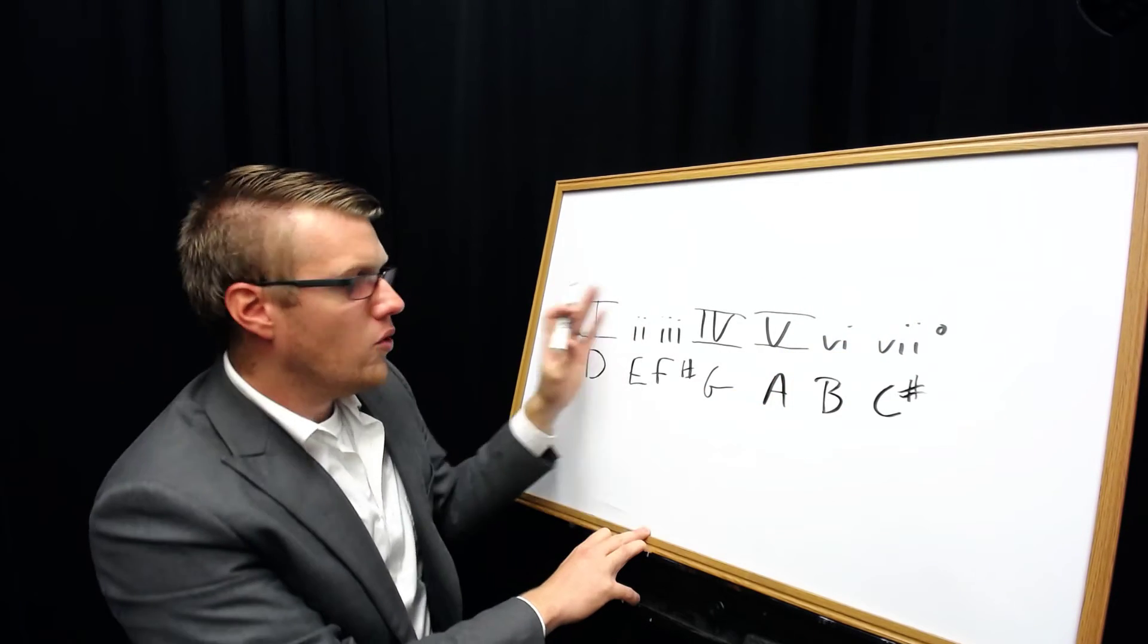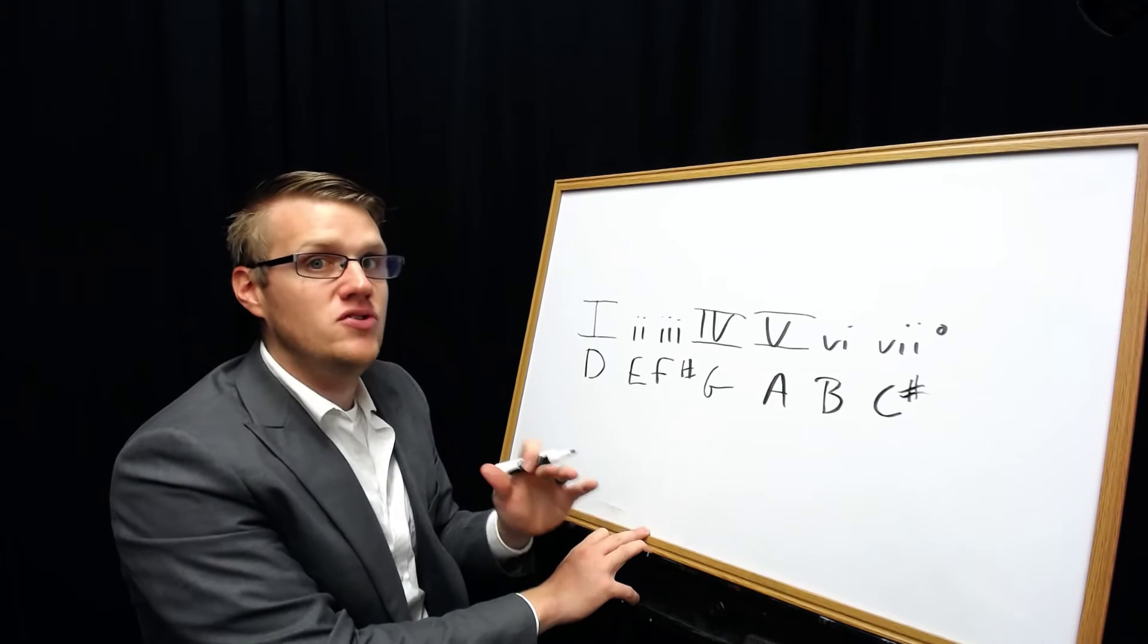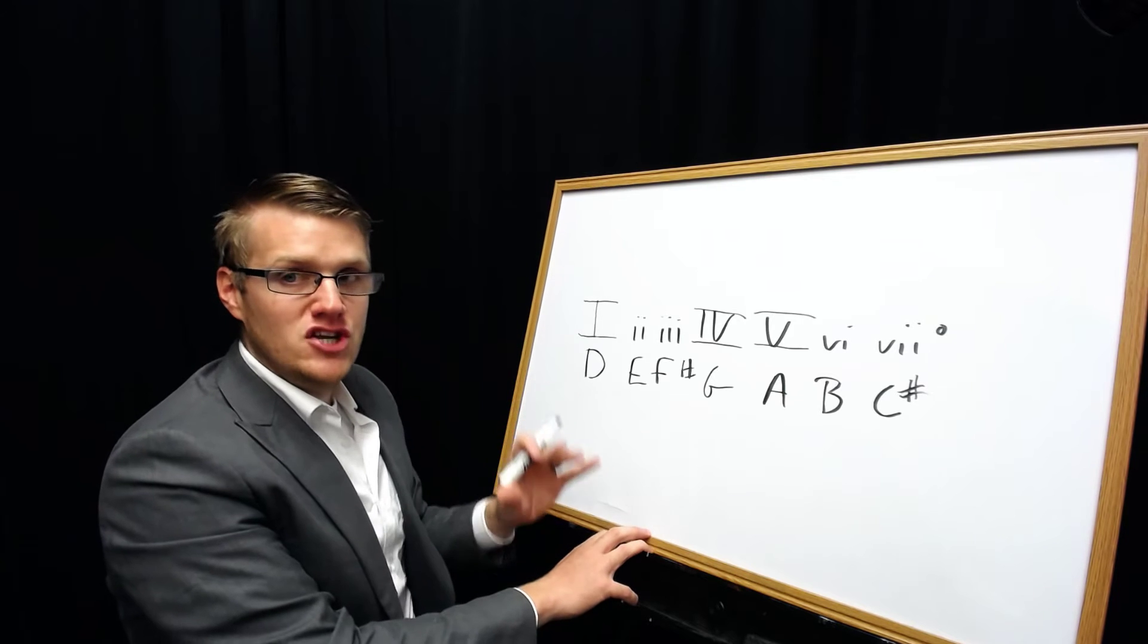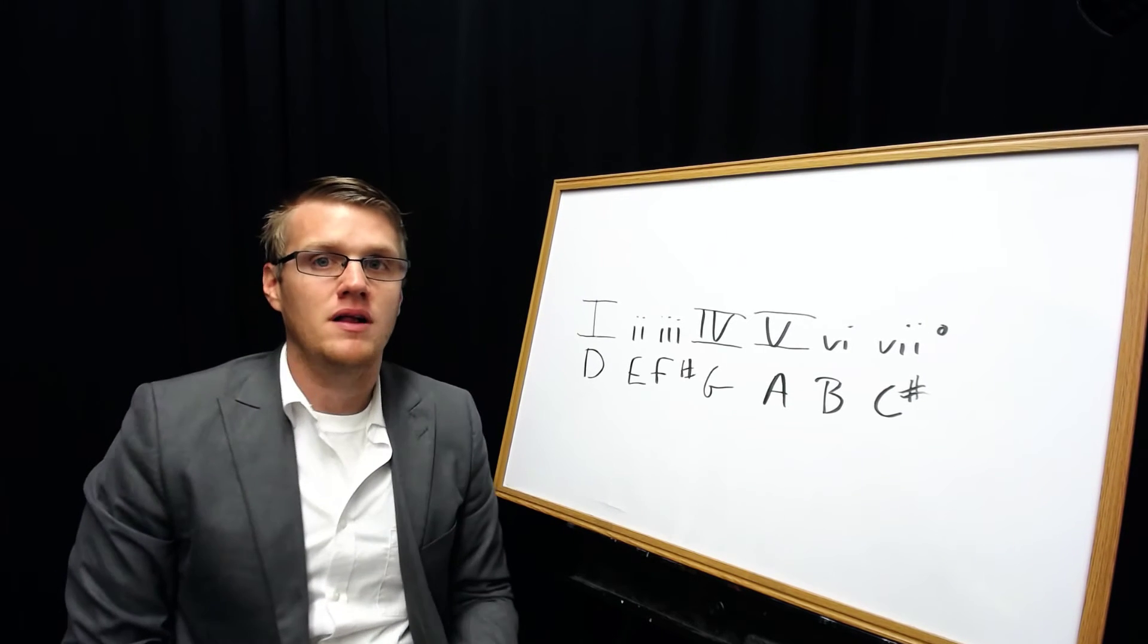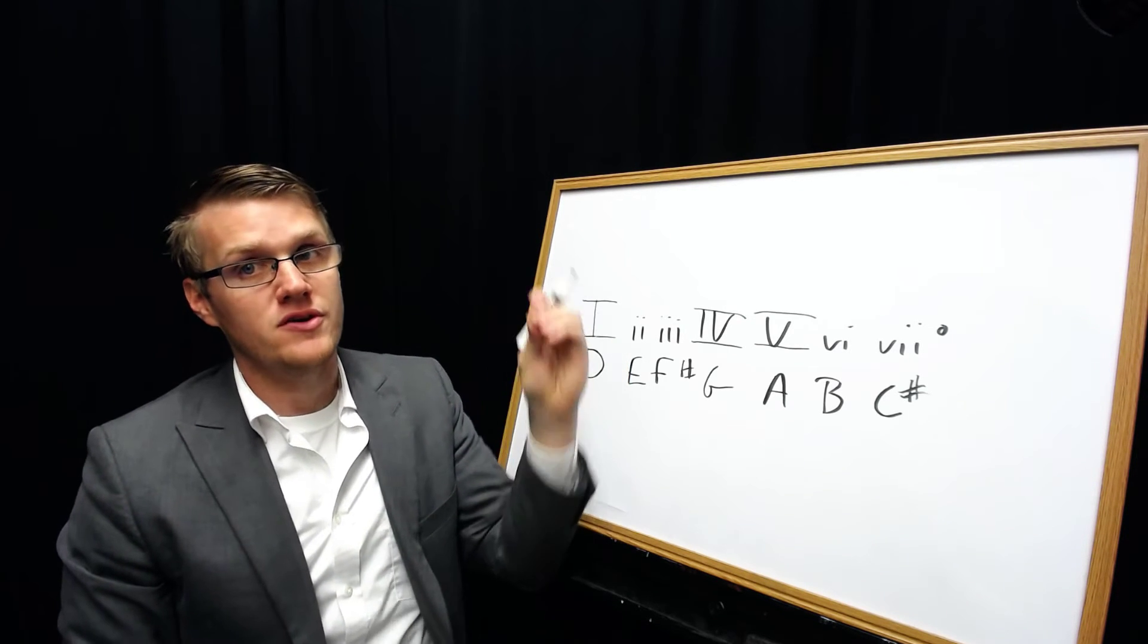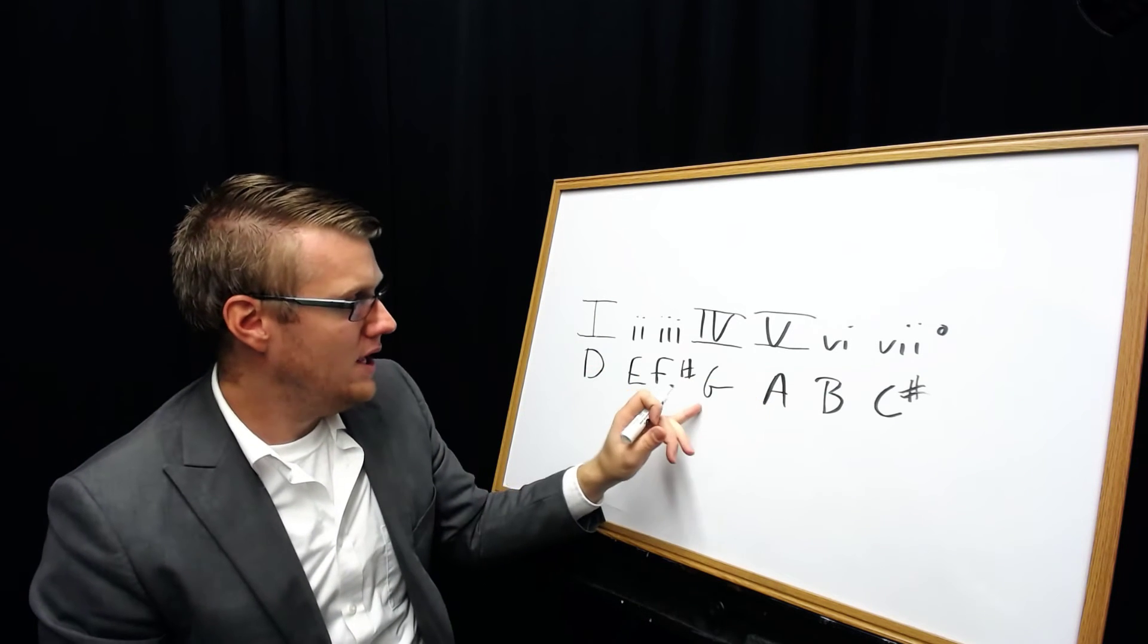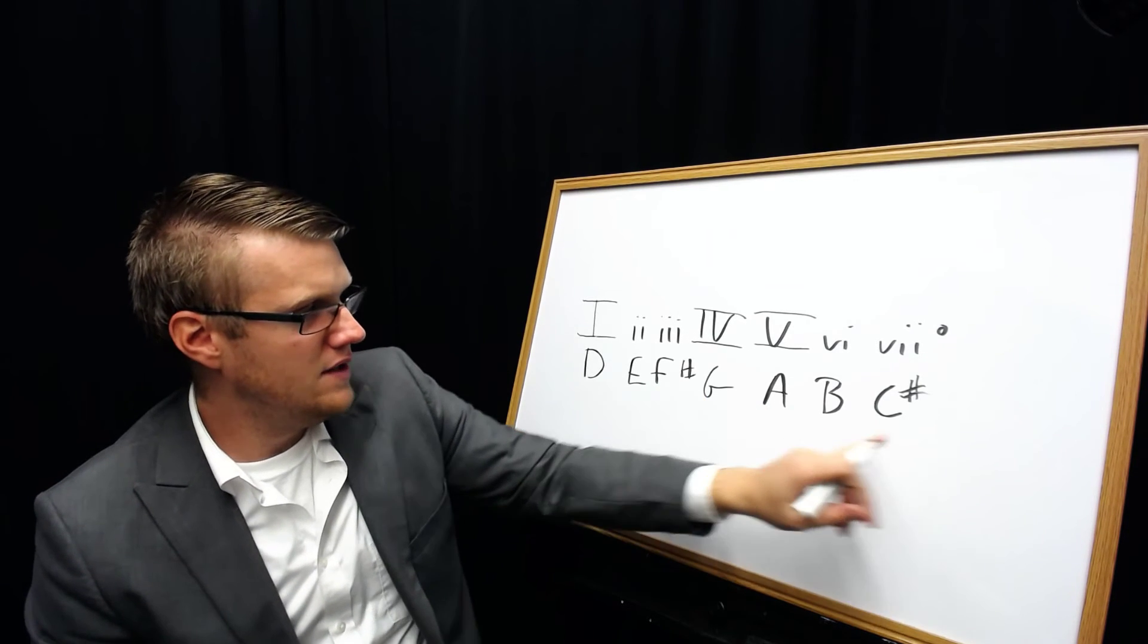So the four chord in the key of D is G major. It has two parts to its name: the letter name and the quality. Now to spell that G major triad you could do two things. You could know how to spell a triad using intervals - the distance from the root to the third is a major third, the distance from the third to the fifth is a minor third. Or you can have the D major scale spelled out and just do this order of thirds. So it would be G, B, the next one would be D.